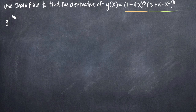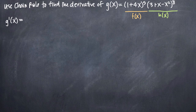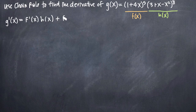So the derivative we'll denote as g prime of x. Remember that the product rule tells us to take the derivative of one of the functions. For example, if we call the orange function f of x and the green function h of x, the product rule tells us to take the derivative of f of x — so f prime of x — multiply that by h of x without doing anything to h of x, and then add to that f of x as it is times the derivative of h of x. So we just reverse which one is the derivative, and we take the sum of those.